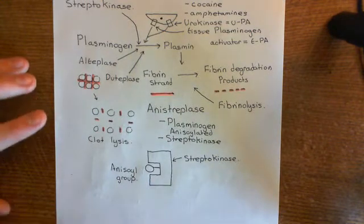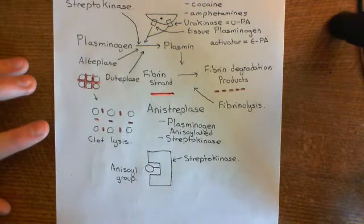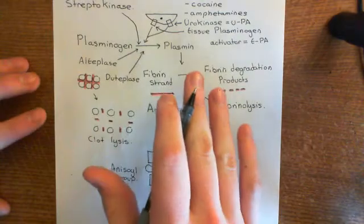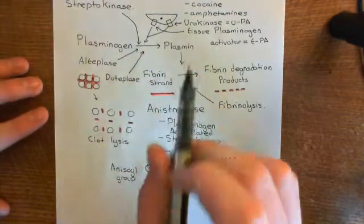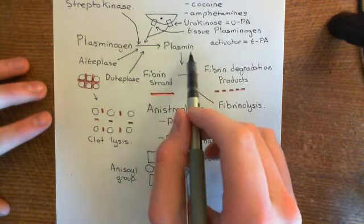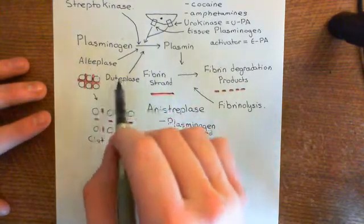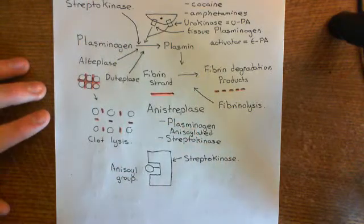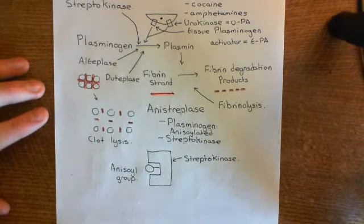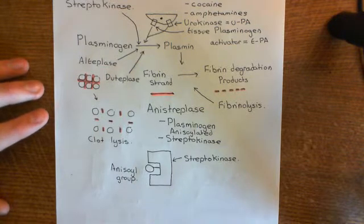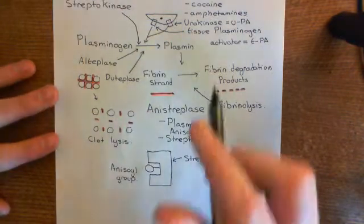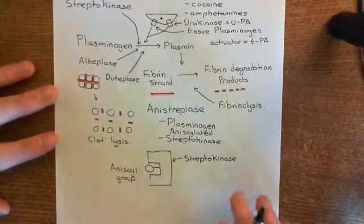I want to also discuss some drugs which are not antithrombotics, but which seem relevant to what we're discussing here. There are actually some drugs which are capable of inhibiting the enzyme plasmin — so these are exactly the opposite of those fibrinolytics. Those drugs promote fibrinolysis; the drugs I'm going to discuss now will stop fibrinolysis, so they're actually pro-thrombotic. But if you have excessive bleeding, then these drugs may well be necessary.